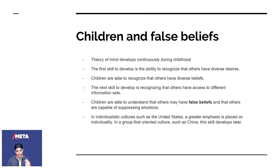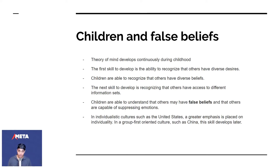A child starts realizing that's the next thing to develop. Then children are able to understand that others might have false beliefs and that others are capable of suppressing emotions. Here's where it starts getting tricky, because children start realizing that somebody could have a belief and that belief could be wrong.